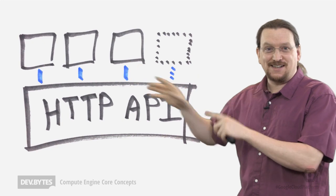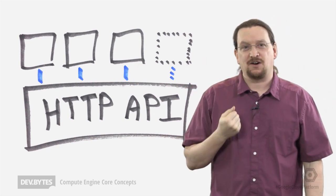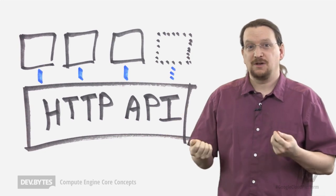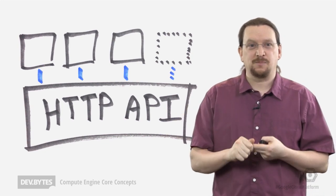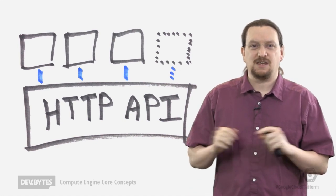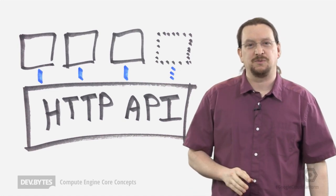All of this access, all of the access to Compute Engine, is via our HTTP and JSON API, everything I just mentioned. Also, our command line tools and our developer console built on the same API. This means your code has the same access to all the features of Google Compute Engine.